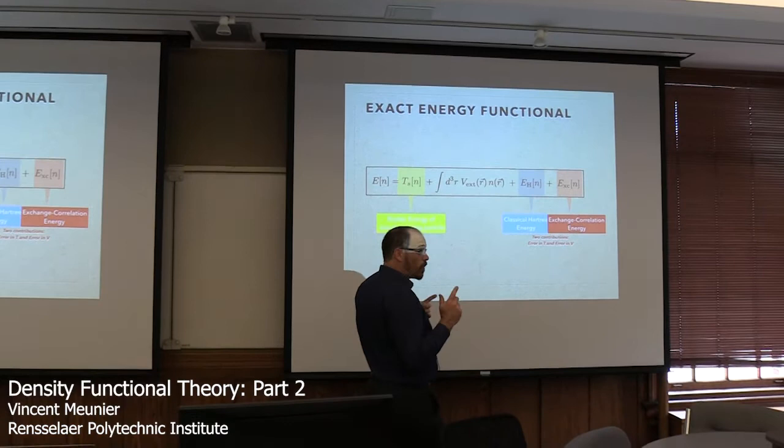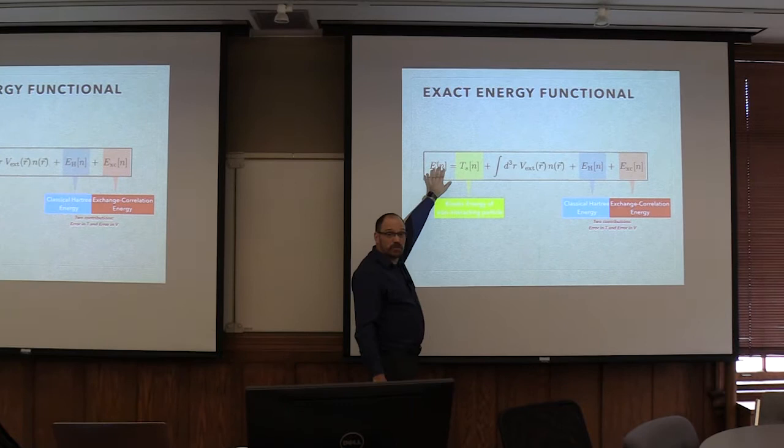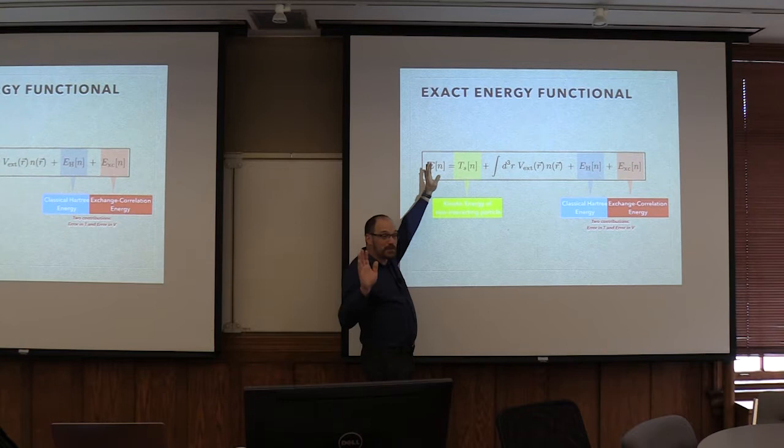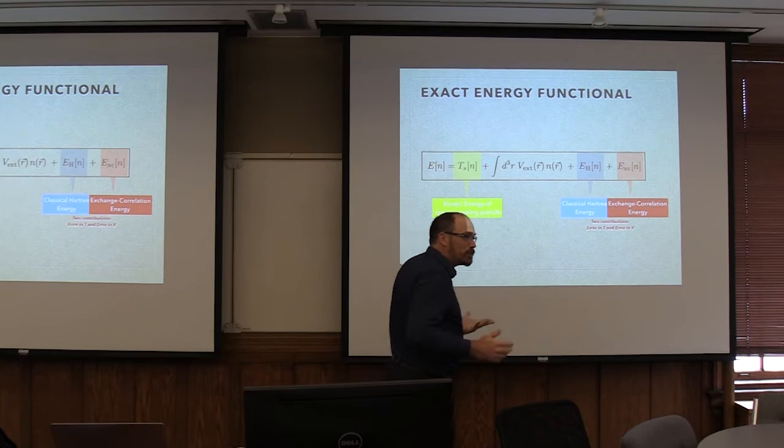The density that solves your problem will be the one that minimizes the energy functional. So far, so good. Now we have an additional problem: it is impossible to write the energy E explicitly as a function of density. If we could, the problem would be solved completely once and for all — that would be the wonderful thing. So this is where we have to do approximations.